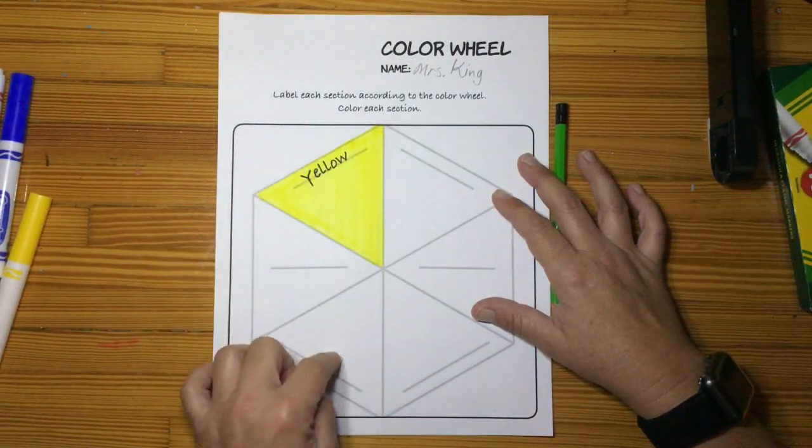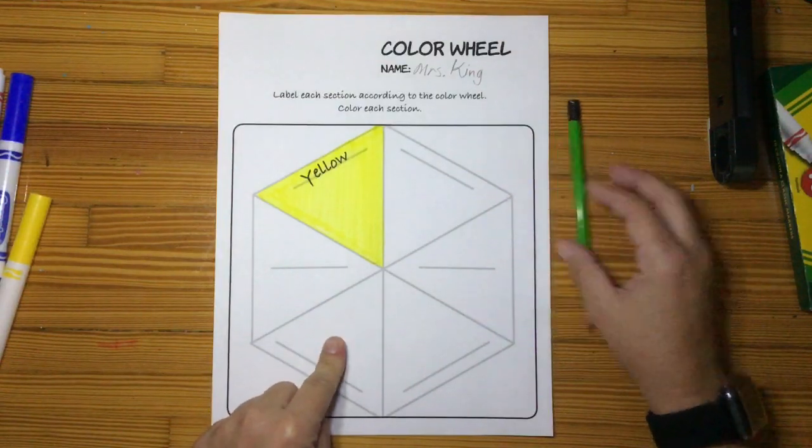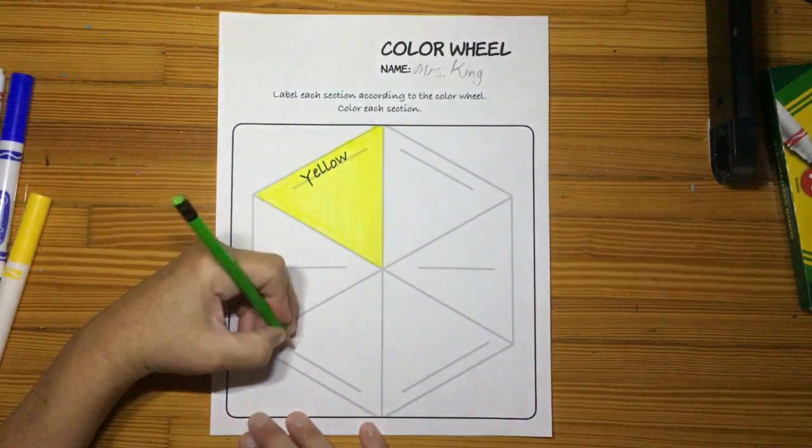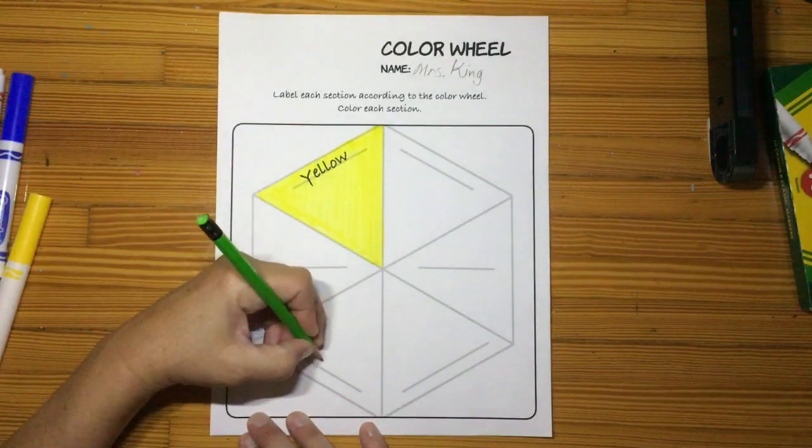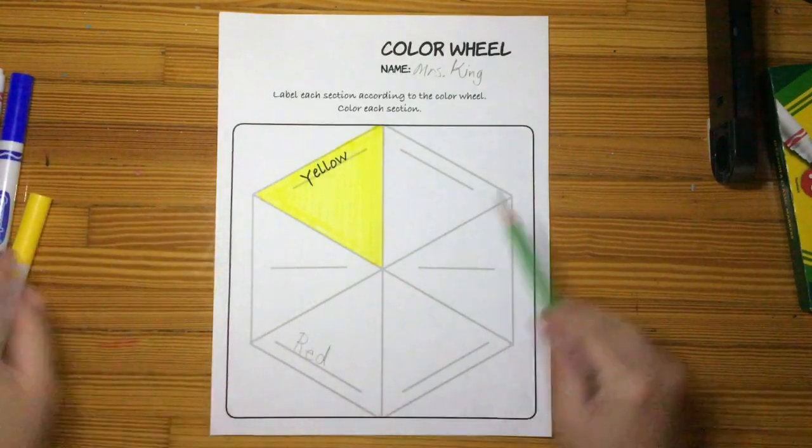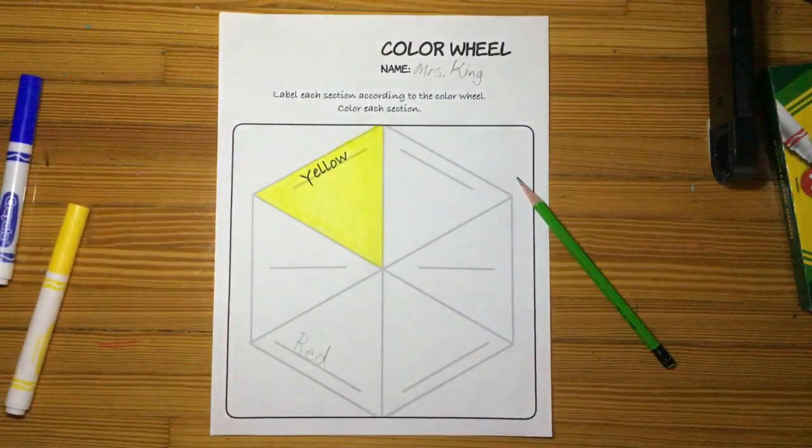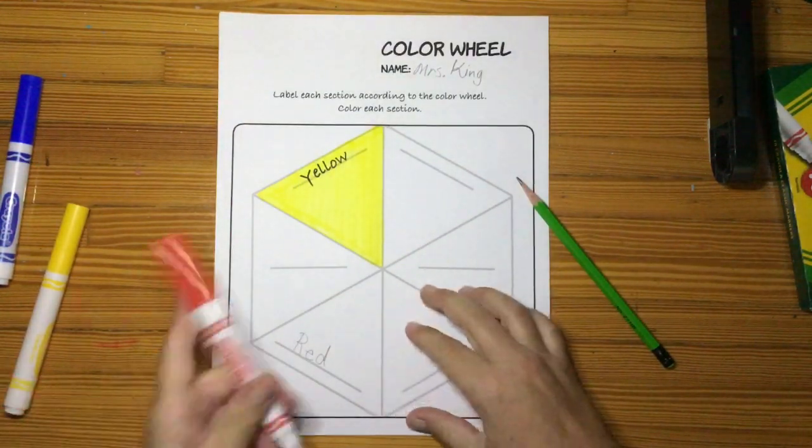I want you to write red in this space. So red is R-E-D. Take your red marker and color this red.